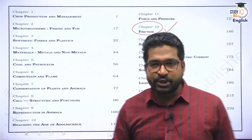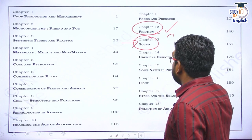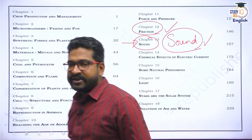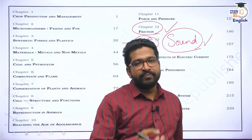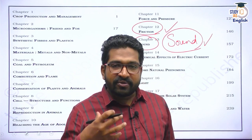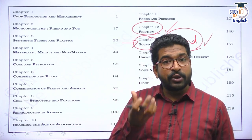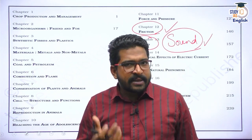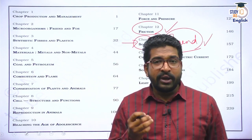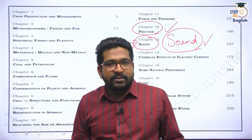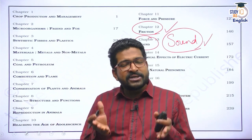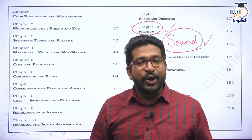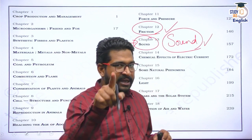Today we will move on and discuss Chapter 13 — Sound. It's a very interesting chapter. We will understand what sound means, the characteristics of sound waves, how humans produce sound and how we receive and respond to those sounds. Some sounds are loud, some are low in intensity. Sometimes we like music, sometimes a factory becomes noise. We'll also discuss the distinction between music and noise, and at the end, we'll talk about noise pollution.